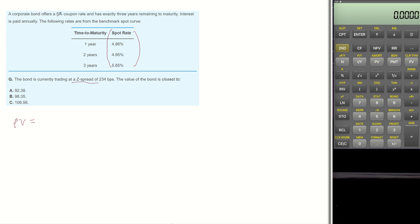With a coupon rate of 5% and 3 years remaining to maturity, the present value becomes payment divided by (1 plus year 1 spot rate plus G-spread), plus payment divided by (1 plus year 2 spot rate plus G-spread) to the power of 2, plus future value plus payment divided by (1 plus year 3 spot rate plus G-spread) to the power of 3.